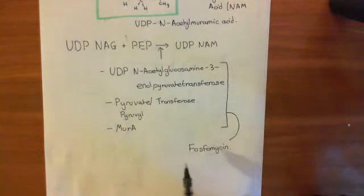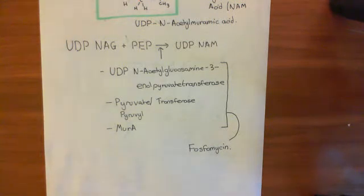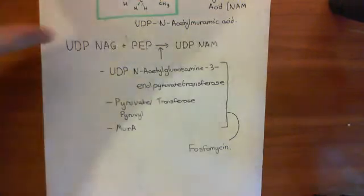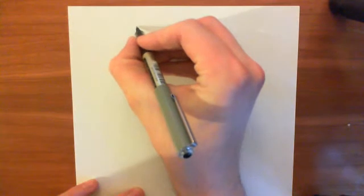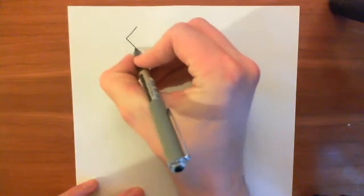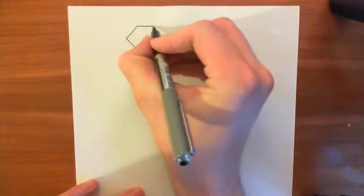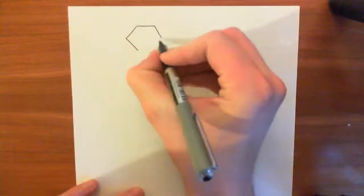That's an important antibiotic, and that's why we looked at this step. Now, having synthesized UDP-N-acetylmuramic acid, what are we going to do with it? We're going to convert it further by adding on a bunch of amino acids. Let's redraw the structure of UDP-N-acetylmuramic acid and see which amino acids we're going to add.